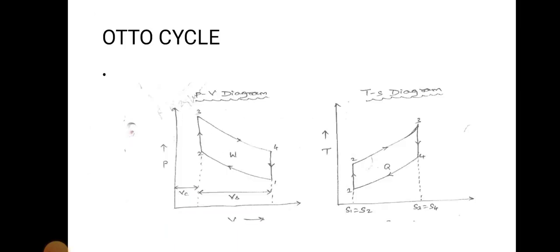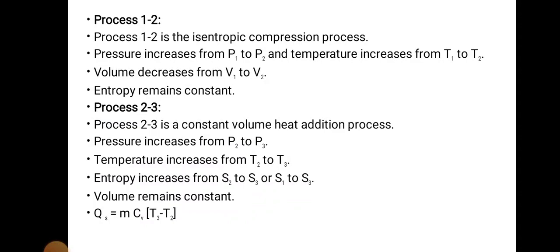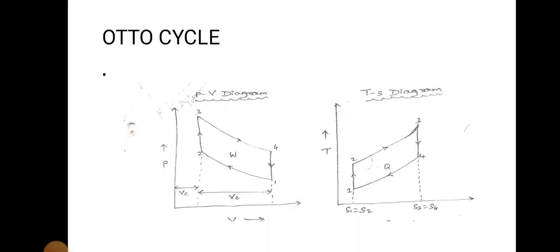Process 2 to 3 is a constant volume heat addition process. You can see the vertical line 2 to 3 on the PV diagram — pressure increases from P2 to P3 while volume remains constant, V2 equal to V3. In this section we are giving heat supply: Q_s equals m·C_V·(T3 − T2), where T3 is the final temperature and T2 is the initial temperature.